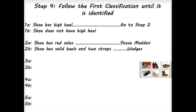In step four, we're going to follow step 1A all the way through until we've classified the specific name of those types of shoes. So if a shoe has a high heel, we go to step two and split that into two more groups. If a shoe has a high heel and red soles, they're going to be Steve Maddox. If the shoe has a high heel and it's solid with two straps, they're going to be our wedges.